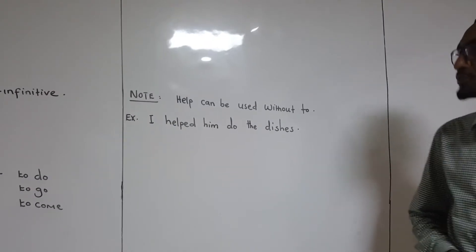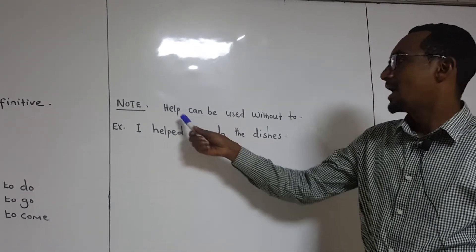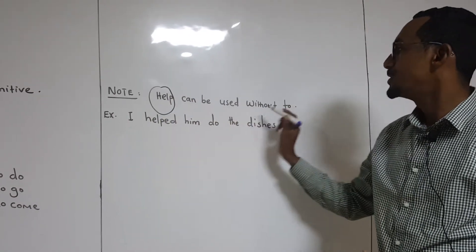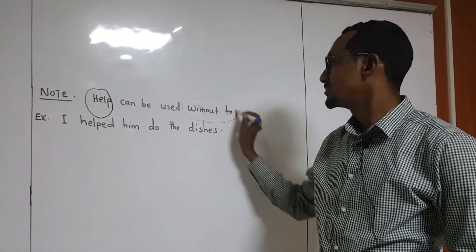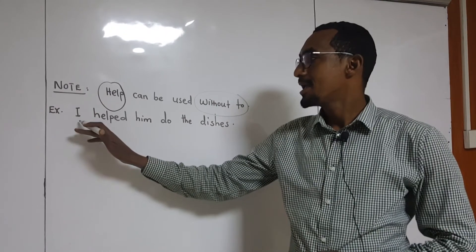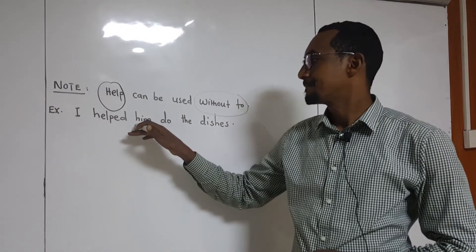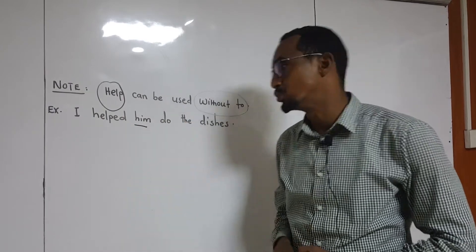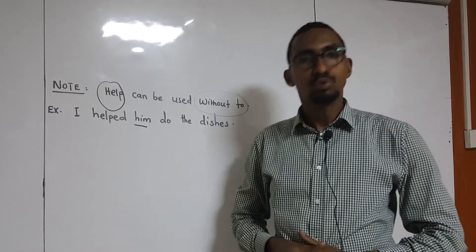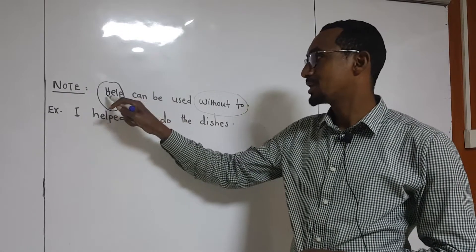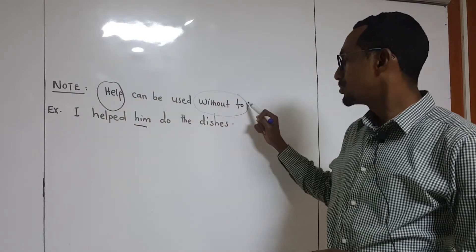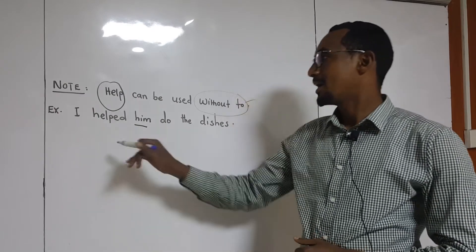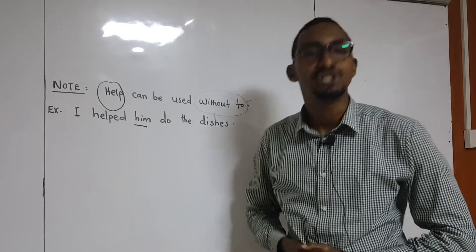Let's learn one important point here. Help — this verb is also special. Help can be used without 'to'. For example, you can say: 'I helped him do the dishes', which means to wash the dishes.